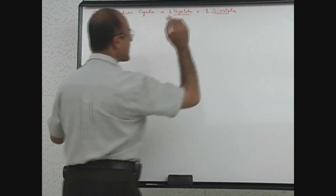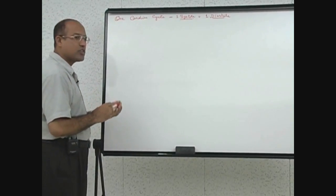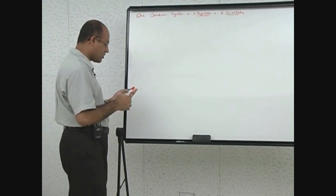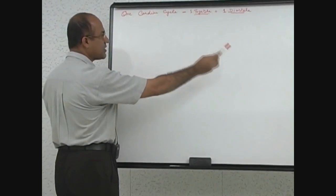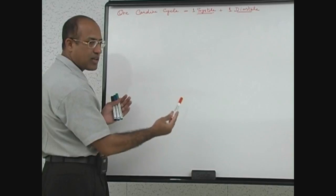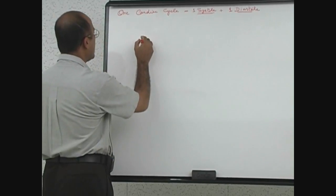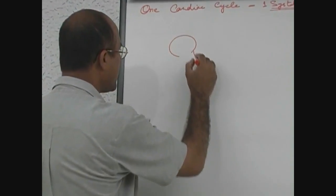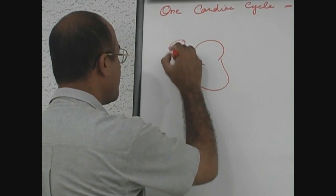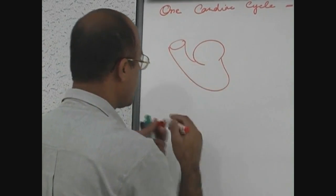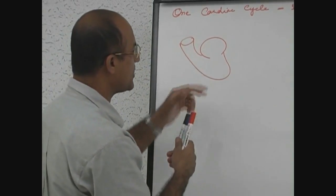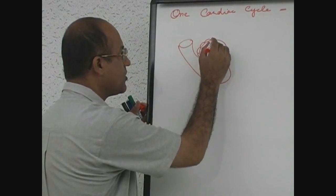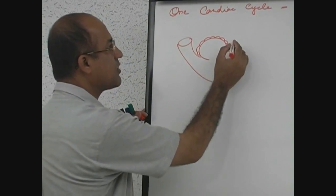We start the events from the left heart, from atrial contraction. The events presented in the diagram for the left heart — basically similar events occur in the right heart. Here is the left atrium, here is the left ventricle, and aorta. We have to study the events in the left ventricle.